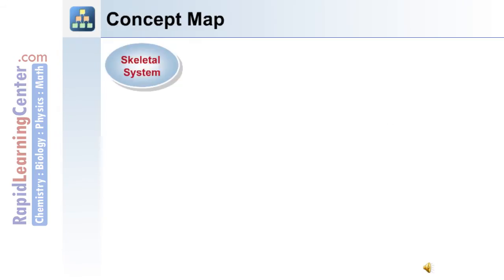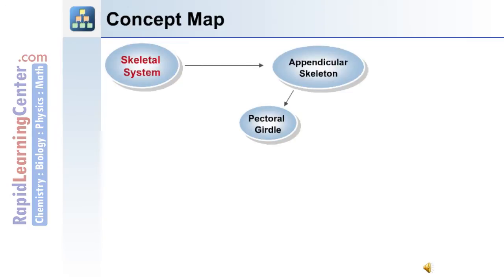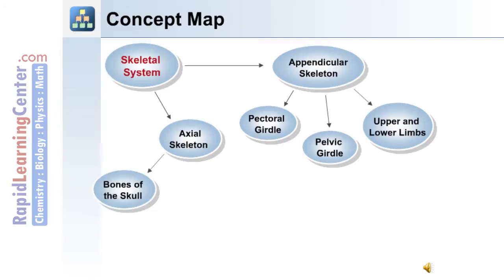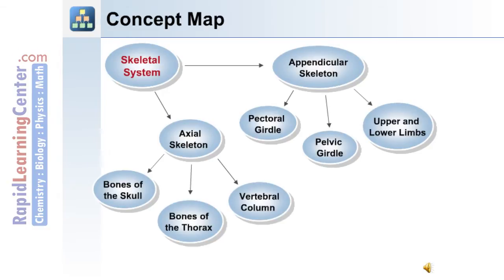The axial skeleton concept map. The skeletal system is made up of the appendicular skeleton, which includes the pectoral girdle, the pelvic girdle, and the upper and lower limbs. The skeletal system also is made up of the axial skeleton. In this tutorial we'll cover the bones of the skull, the bones of the thorax, and the vertebral column.